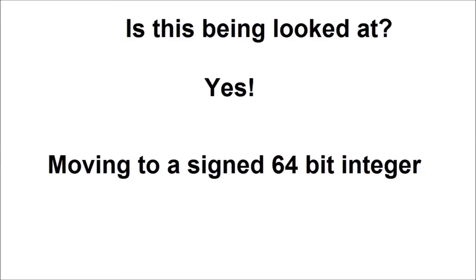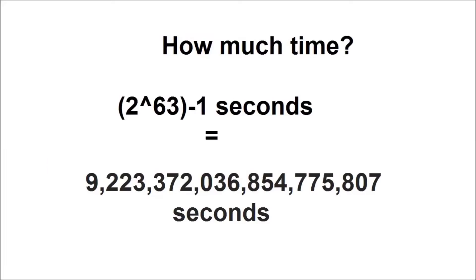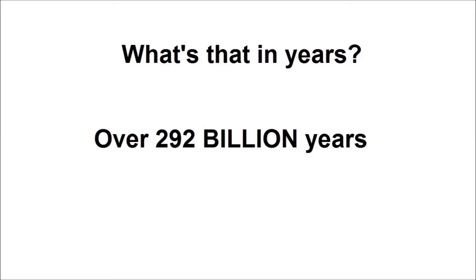So is this being looked at? The short answer is yes. The main solution being pushed out is to use a signed 64-bit integer to count the time. Using a signed 64-bit integer gives us 2 to the power of 63 minus 1 seconds. That is equal to 9 quintillion, 223 quadrillion, 372 trillion, 36 billion, 854 million, 775,807 seconds — which is a hell of a lot of seconds. In real time, that gives us over 292 billion years, taking us to 3:30pm and 8 seconds on Sunday, December 4th of the year 292 billion, 277 million, 26,596.